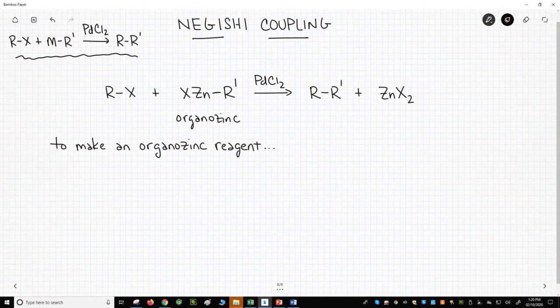The use of an organozinc reagent in a cross-coupling reaction is called a Negishi coupling.